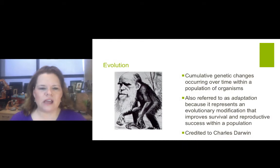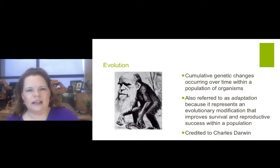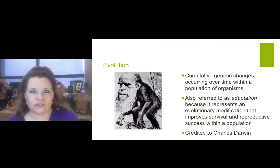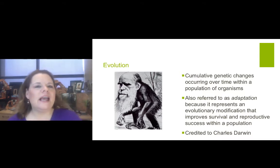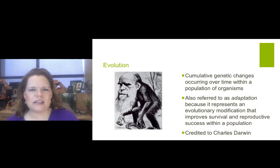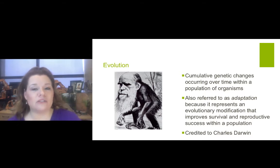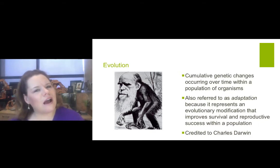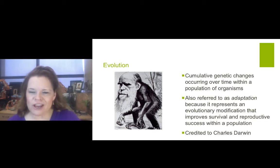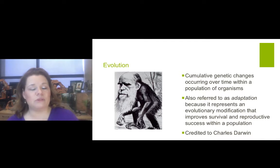Important concept about natural selection. Charles Darwin sometimes gets a bad rap but he deserves a really good one. He had a passion for rocks and he liked to travel, and he took what was out in nature and observed it during his voyage on the Beagle. His concept of evolution: cumulative genetic changes occurring over time within a population of organisms. This can be passed from generation to generation and is also referred to as adaptation, because it represents an evolutionary modification that improves survival and reproduction success within a population.